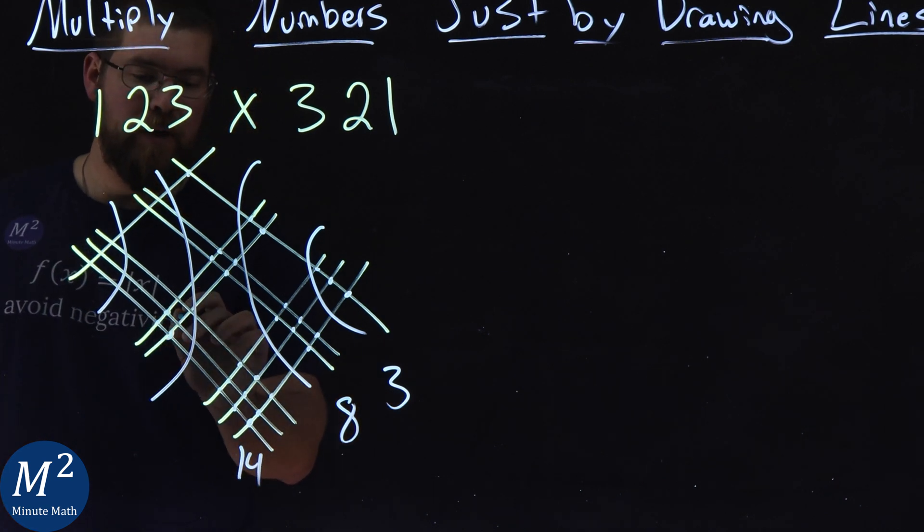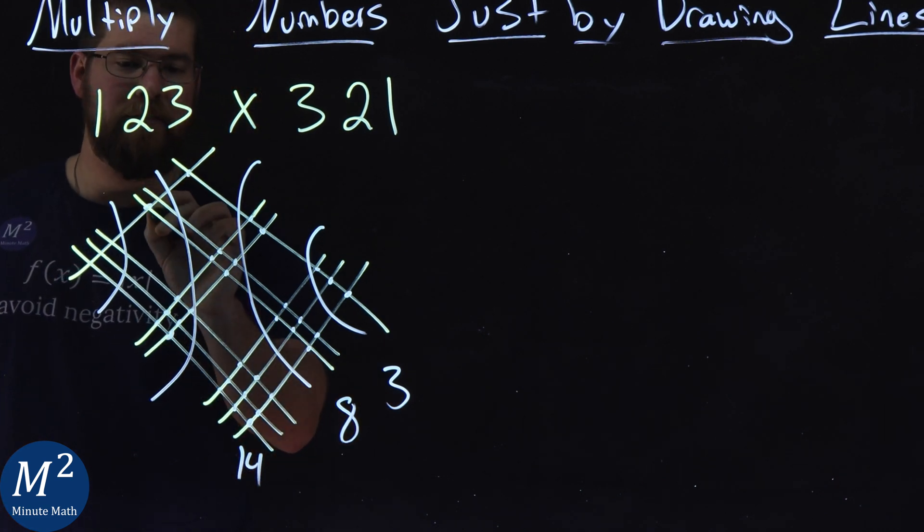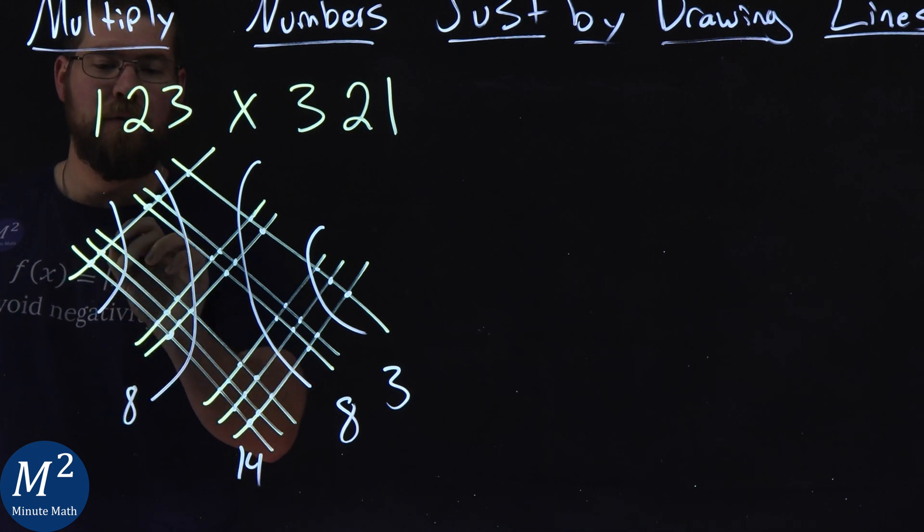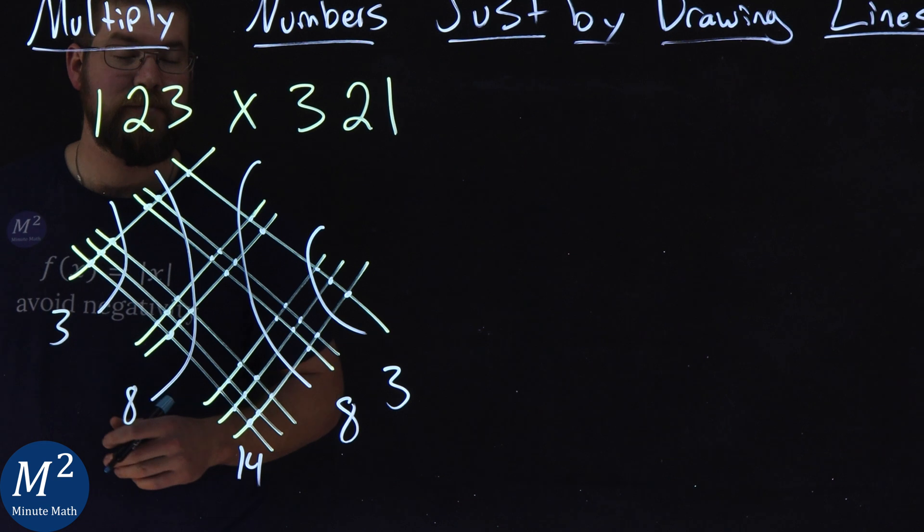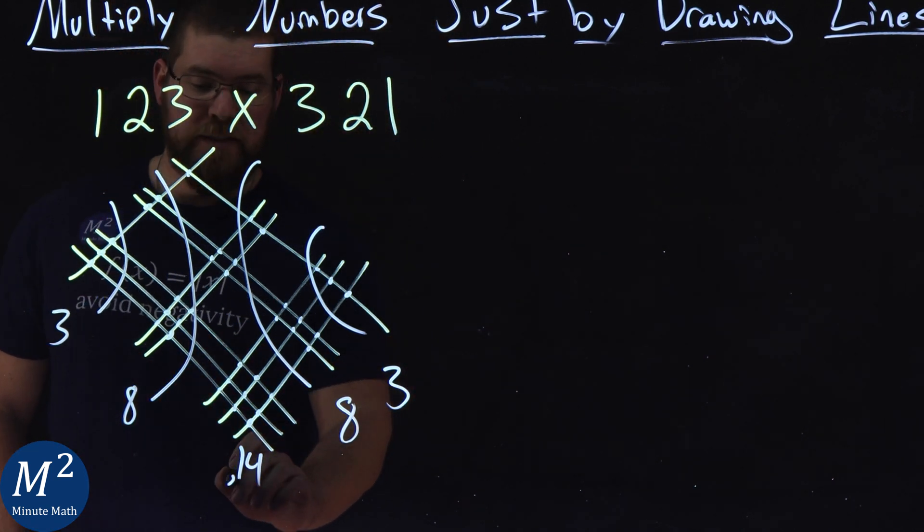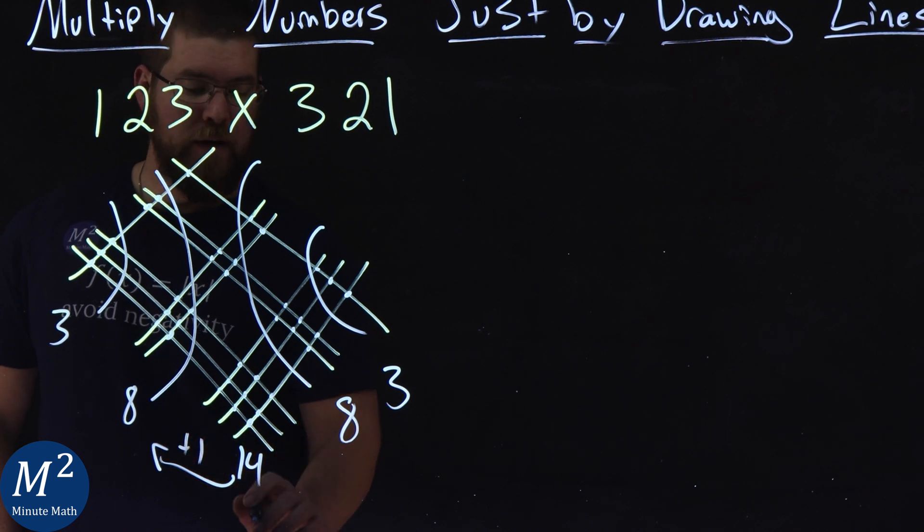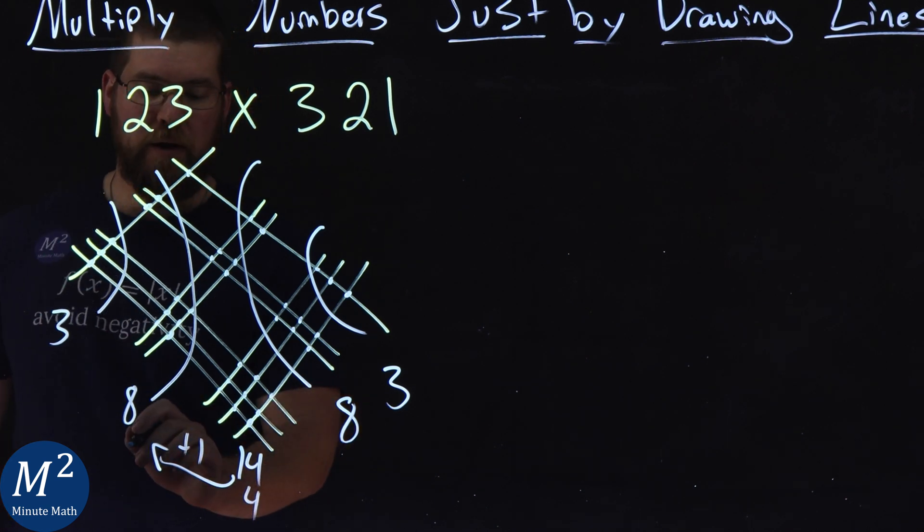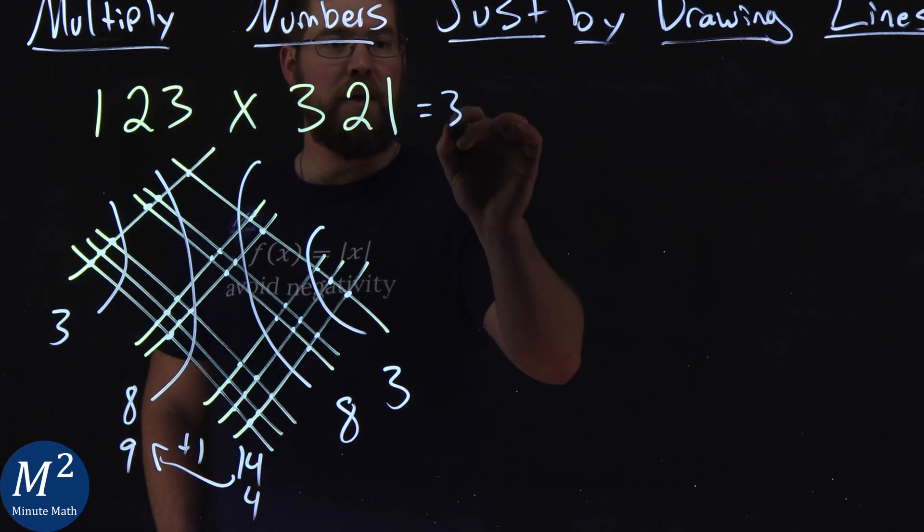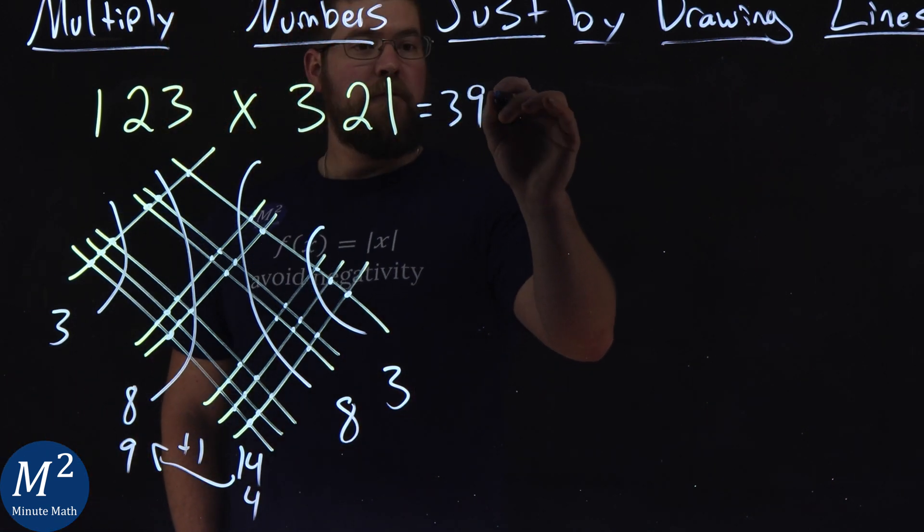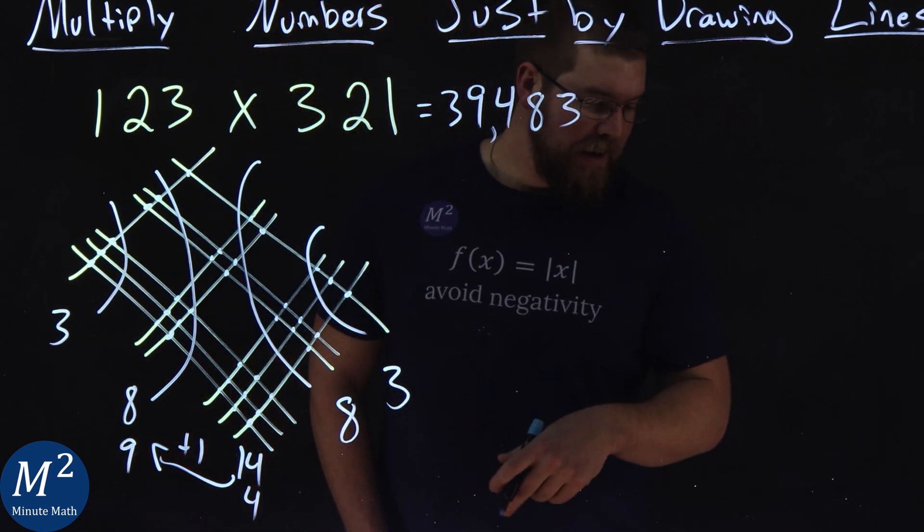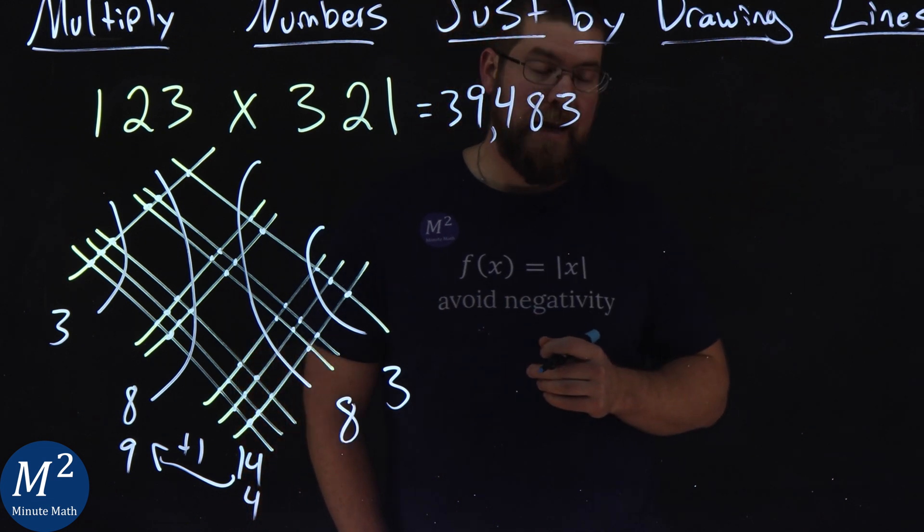This one. 1, 2, 3, 4, 5, 6, 7, 8, 9. 10, 11, 12, 13, 14. In the middle. Then, 1, 2, 3, 4, 5, 6, 7, 8. Right here. And, 1, 2, 3. Again. Symmetrical. Beautiful. Now, our process stays the same. We have a two-digit number. We're going to send the plus 1 here. Keep the 4. And, then, 8 becomes a 9. And, so, this answer now becomes 39483. So, 123 times 321 is 39,483.